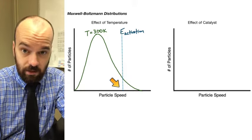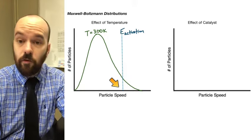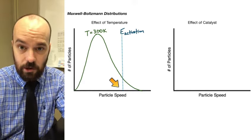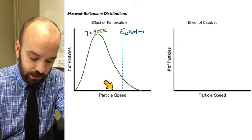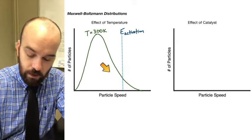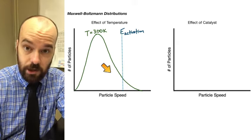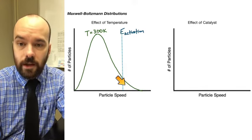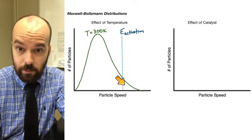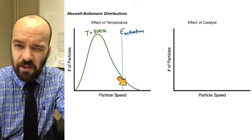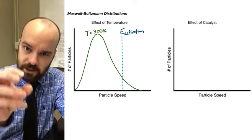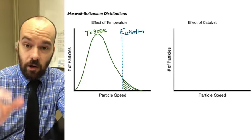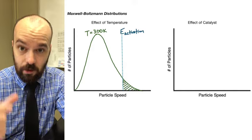Any particles to the left of that line won't have enough speed and therefore won't have enough kinetic energy to overcome the activation energy barrier. Any collisions with these molecules will not result in a reaction. So we really only have a small number of particles at any given time that can collide and cause the reaction to take place, and we'd expect this to be a relatively slow reaction. Here I am coloring in the particles that can overcome that activation energy barrier when they collide.